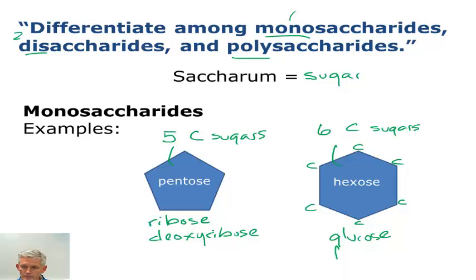The other hexose sugar, fructose, sometimes known as fruit sugar, because this is the sugar present in ripening fruit. There are others like galactose, but those are the two main ones, glucose and fructose. So there you go again, monosaccharides, two types, pentoses and hexoses. The most important hexose is glucose.